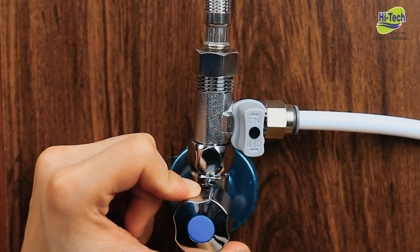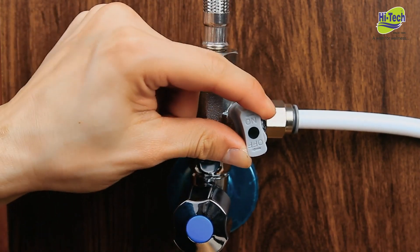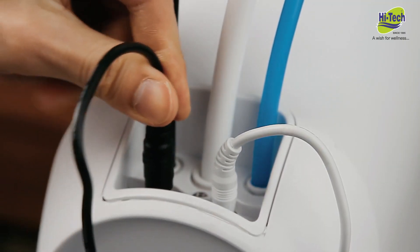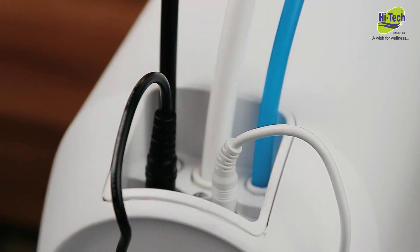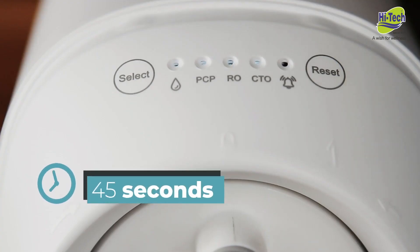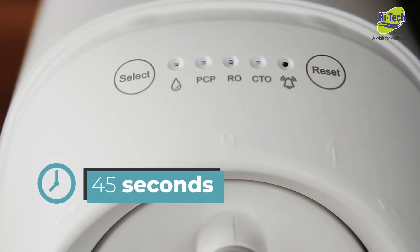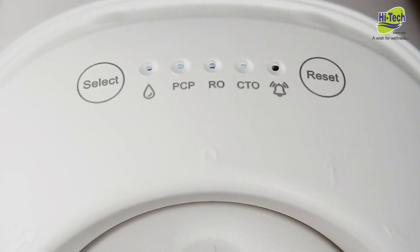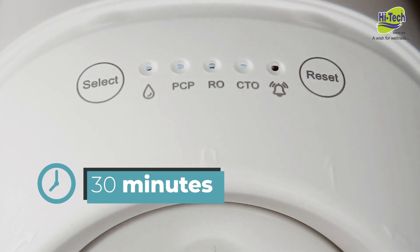Turn on the water supply valve and the RO feed water adapter. Connect the DC cable to the power port and plug in the power. The system will automatically start flushing for 45 seconds. Turn on the RO faucet. Let the faucet run for 30 minutes to flush out the protective liquid in the RO filter.